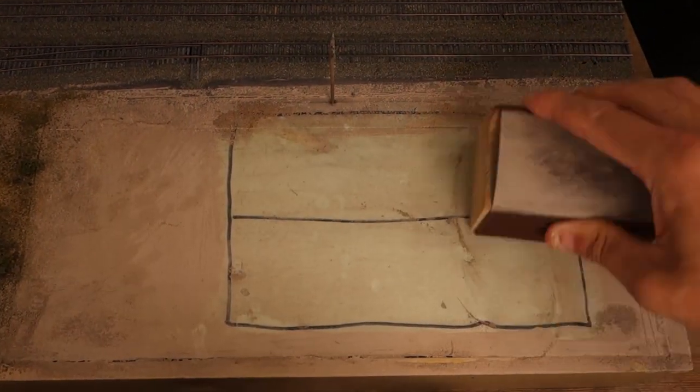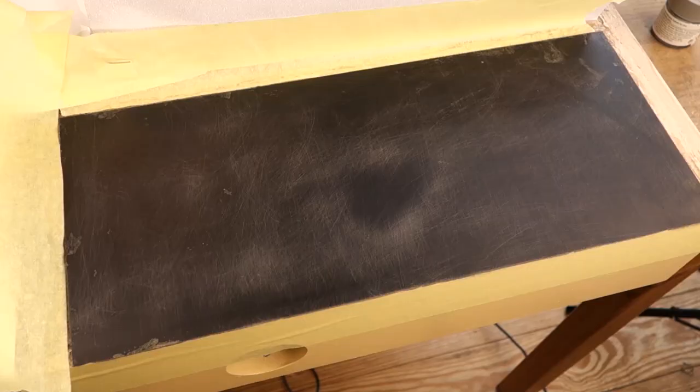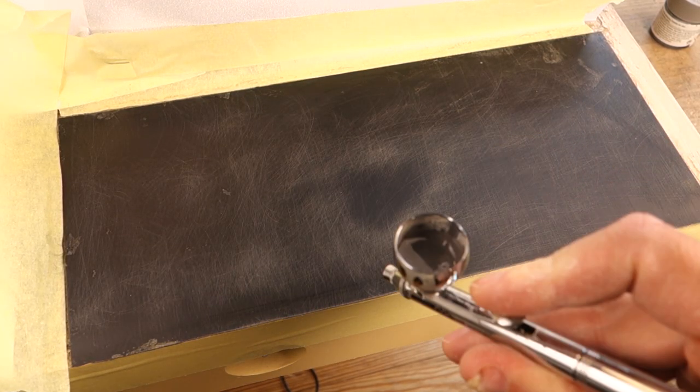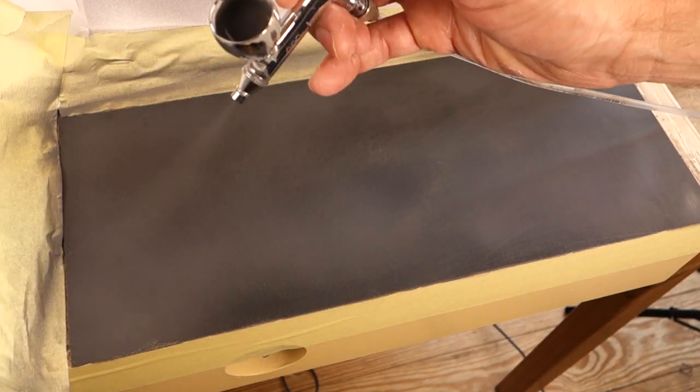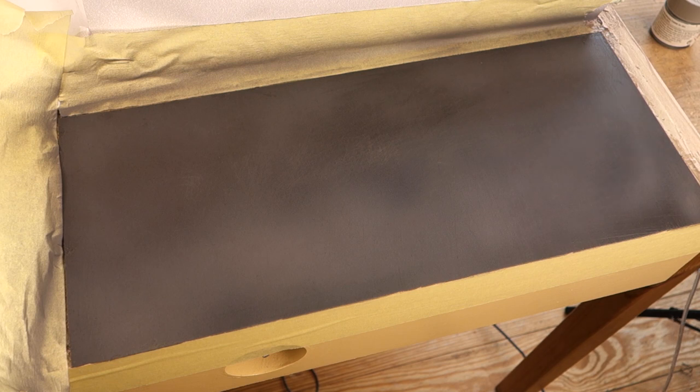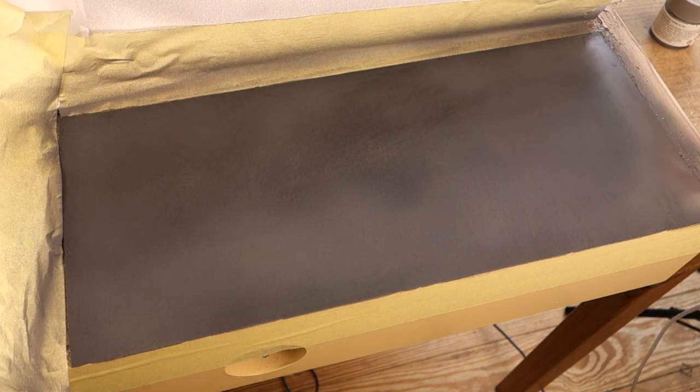Since I've used solvent-based contact cement with styrene sheets before, I tried to use it here as well. But polystyrene foam is a lot more sensitive to the solvents in the glue than the polystyrene sheets are, so I had to switch to odorless contact cement and wait a couple of days for it to fully cure.